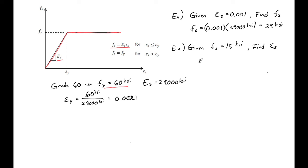So our strain then is just equal to our 15 KSI in the steel divided by our stiffness, 29,000 KSI. And we'll get our strain to be 0.00052.